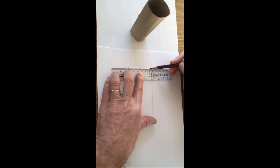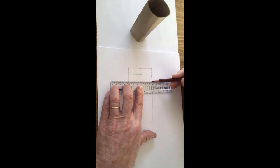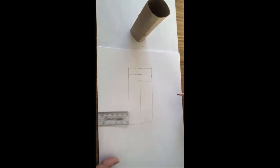I'm then going to add in an extra line there and an extra line there, so I now have a cross at the top of my cylinder.